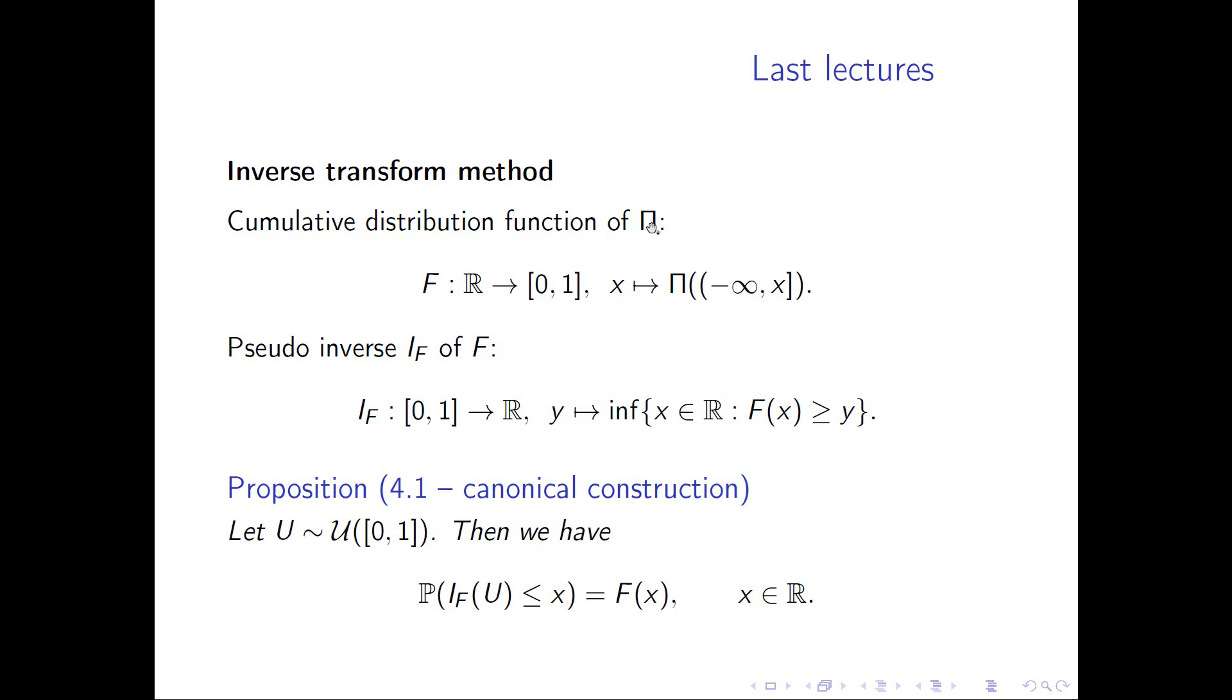So having this pseudo inverse, if it's explicitly available, then we have solved our sampling problem. The next proposition tells us that if we have a uniformly distributed random variable U on [0,1], we plug it into I_F. Then I_F(U) has the correct distribution, meaning P(I_F(U) ≤ x) = F(x). So the inverse transform method is theoretically nice, but it relies on knowing F and I_F.